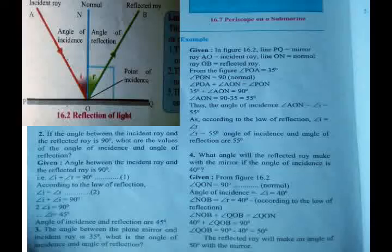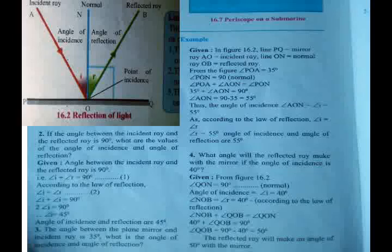Angle NOB plus angle QOB equals angle QON, which is 90 degrees. So 40 degrees plus angle QOB equals 90 degrees. To find angle QOB, subtract: 90 degrees minus 40 degrees equals 50 degrees. The reflected ray will make an angle of 50 degrees with the mirror.